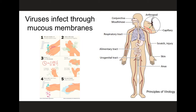Therefore, even if droplets containing infectious virus particles were to land on your hands, your arms, or even the skin of your face, these viruses would not be able to cause an infection. Similarly, if you were to touch a surface that contained infectious virus particles, this wouldn't be enough for the virus to infect you, unless you actively transport those virus particles to one of your mucous membranes, such as your mouth, your nose, or your eyes.